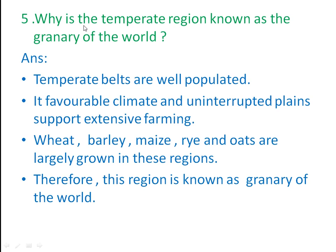Fifth question: why is the temperate region known as the granary of the world? The temperate regions have favorable climate and uninterrupted plains that support extensive farming. Extensive farming, also known as extensive agriculture, is a type of farming that uses a large amount of land with minimal labor, capital, and other resources. It is often used in areas with low population density and abundant land. Wheat, barley, maize, rye, and oats are largely grown in these regions. Therefore, these regions are known as the granary of the world.